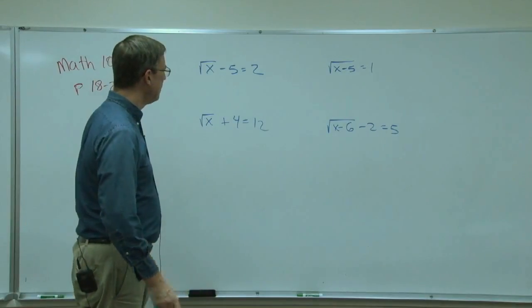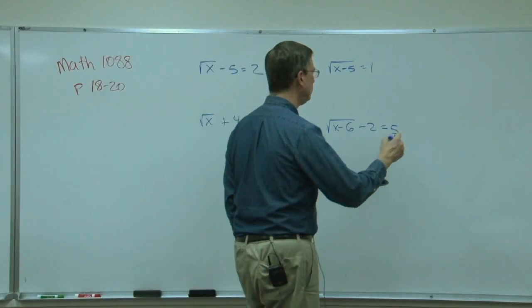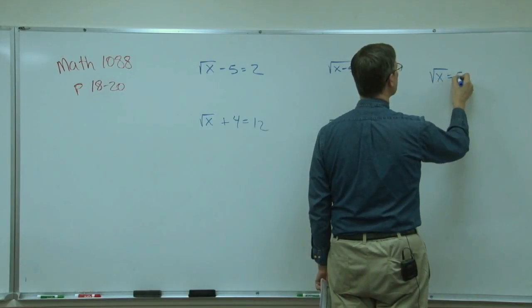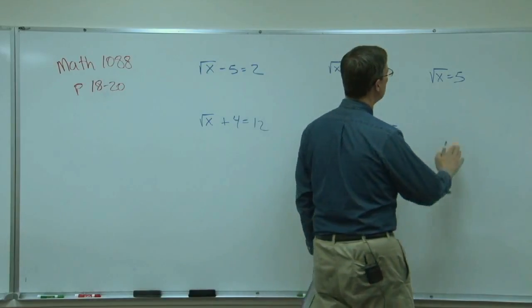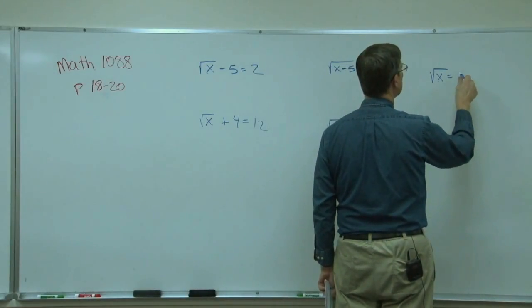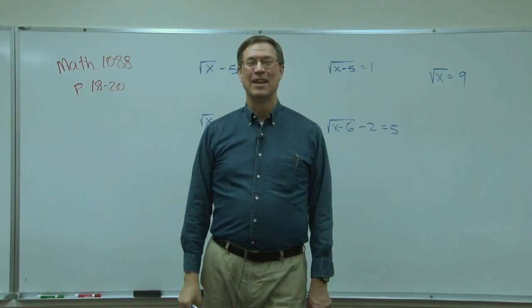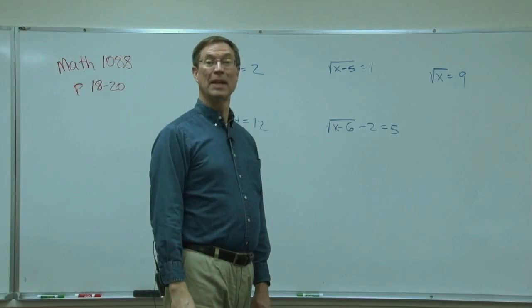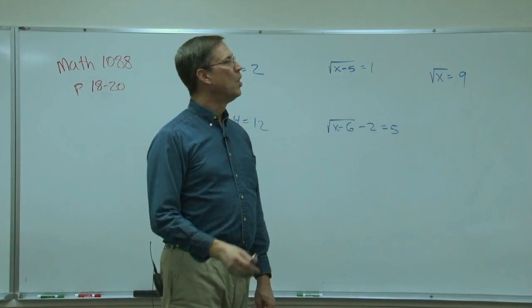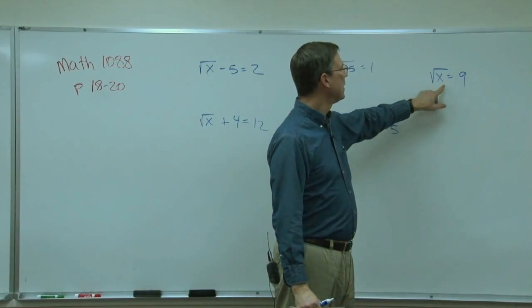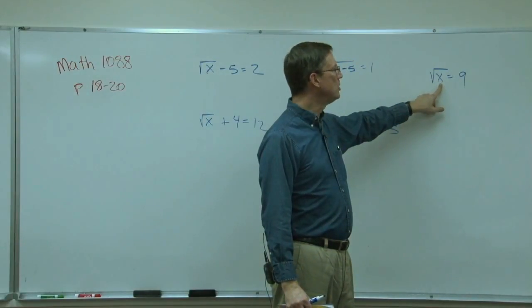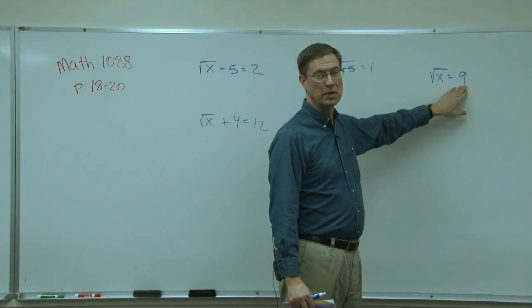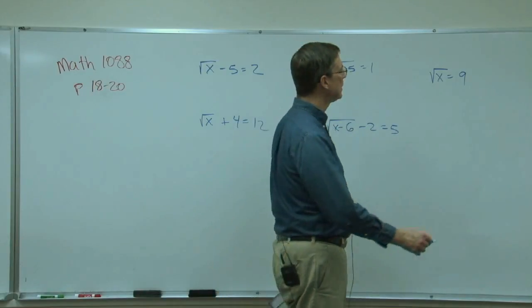I want to start by just pointing out if I have the, let's say, the square root of x equals 5... no, let me choose a different number. Square root of x equals 9. You say, I know that x must be 3. No, we're thinking of a bigger number here that when you take the square root of that big number gives you 9.